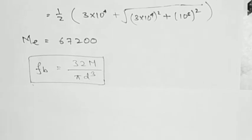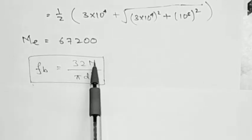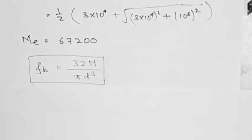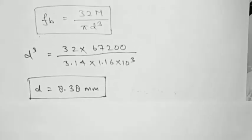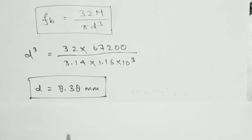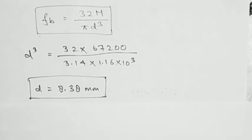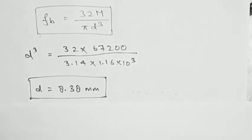We also know that FB = 32M / (π D³). Using this formula and putting M_E in place of M, we find the value of D comes out to be 8.38 mm. Since 8.60 mm is the larger value compared to 8.38 mm, we consider 8.60 mm for designing the shaft. Thank you.